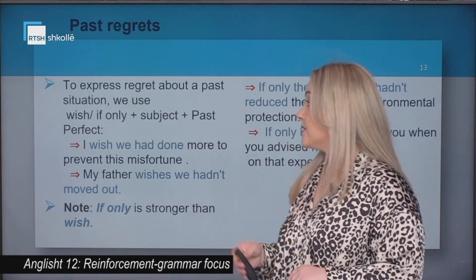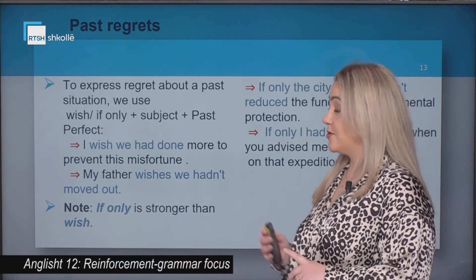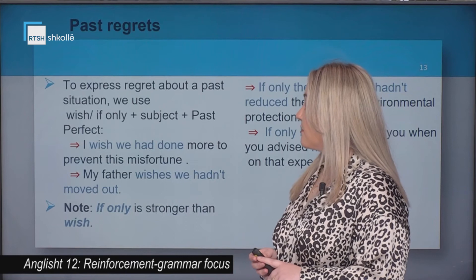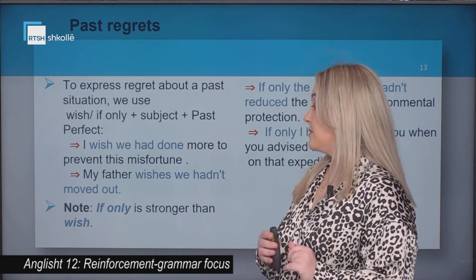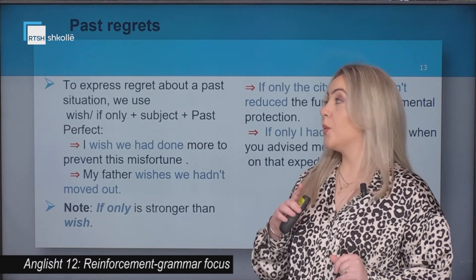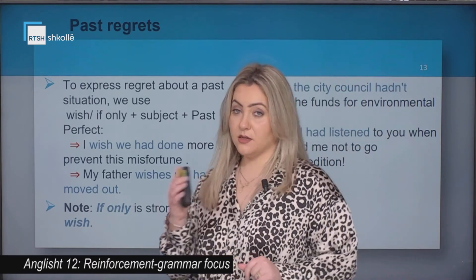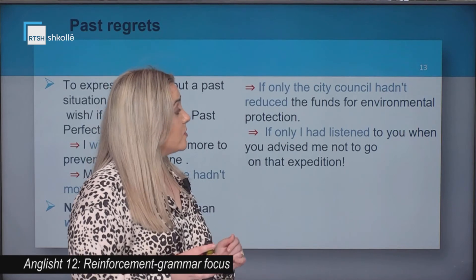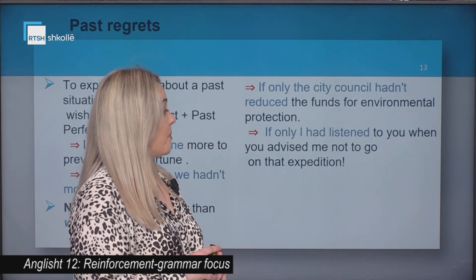For past regrets, to express regret about a past situation, we use 'wish' or 'if only' plus subject plus past perfect. For example, 'I wish we had done more to prevent this misfortune.' If only is stronger than wish. Another example: 'If only the city council hadn't reduced the funds for environmental protection.'